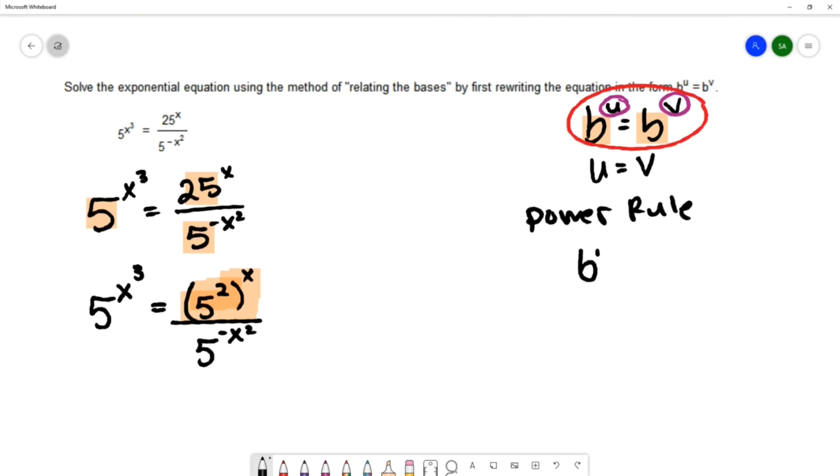b to the m to the n. So if we have an exponential expression that then is raised to a power, we can multiply those powers together to get b to the m times n.